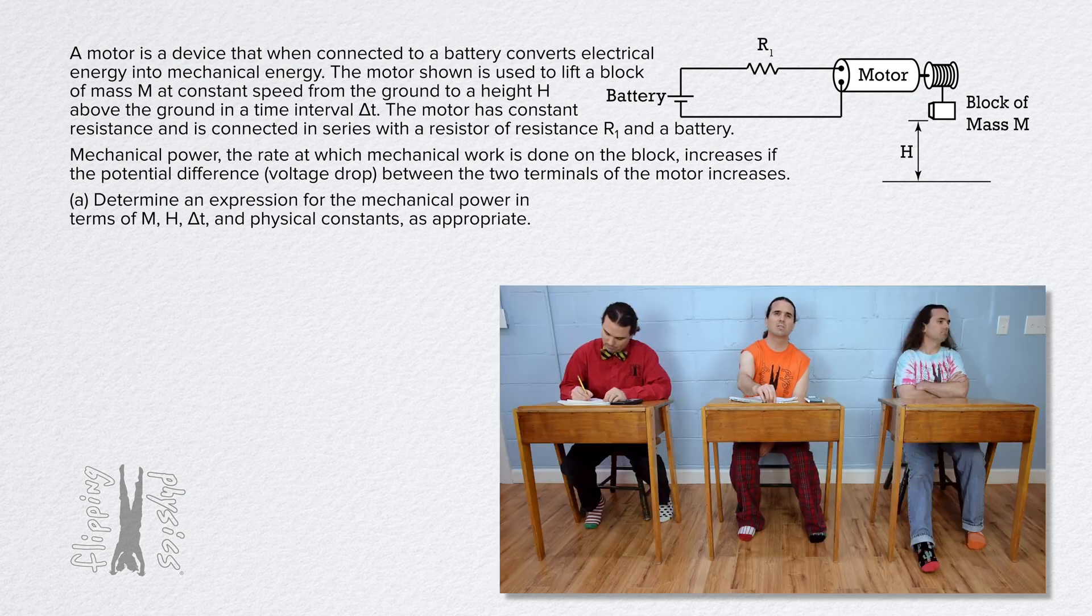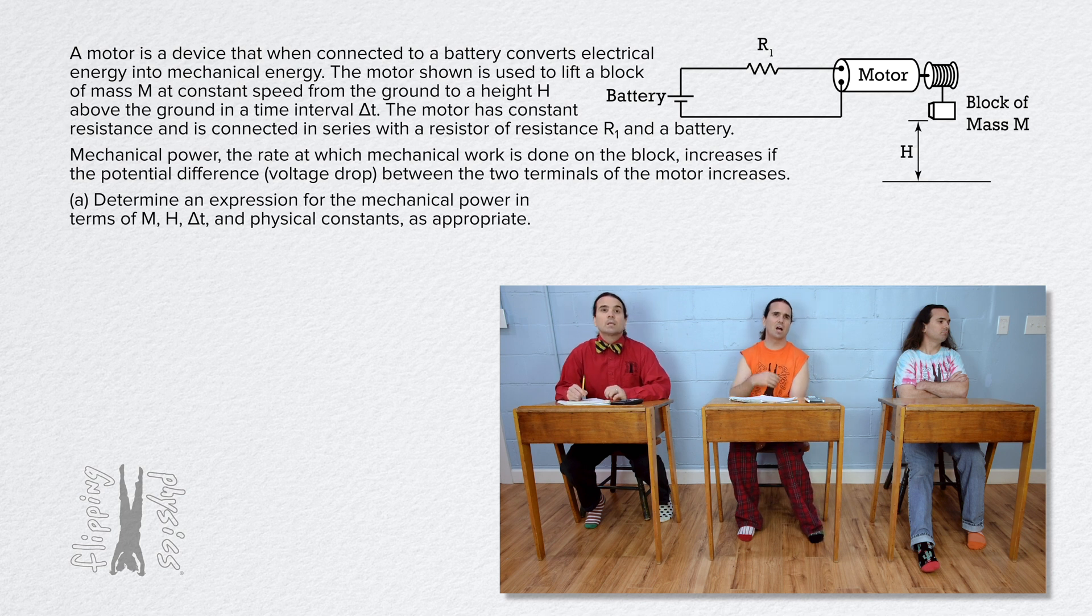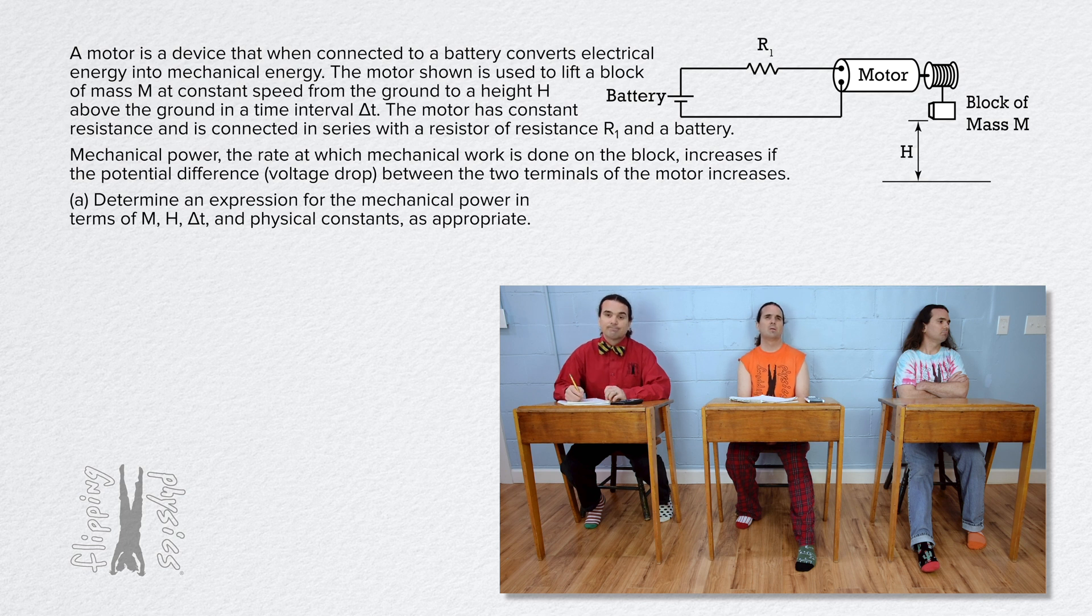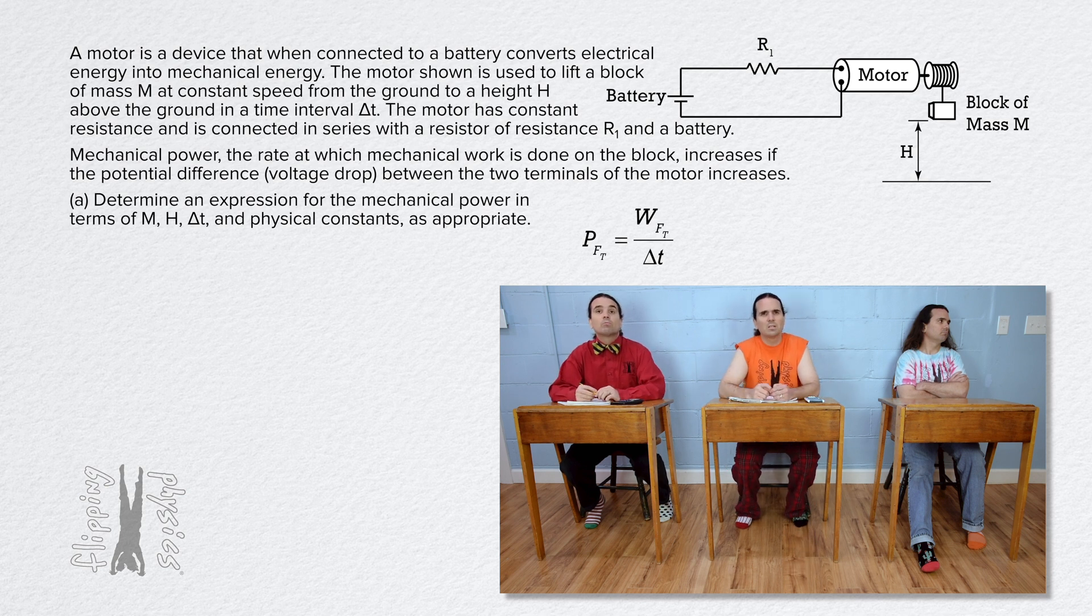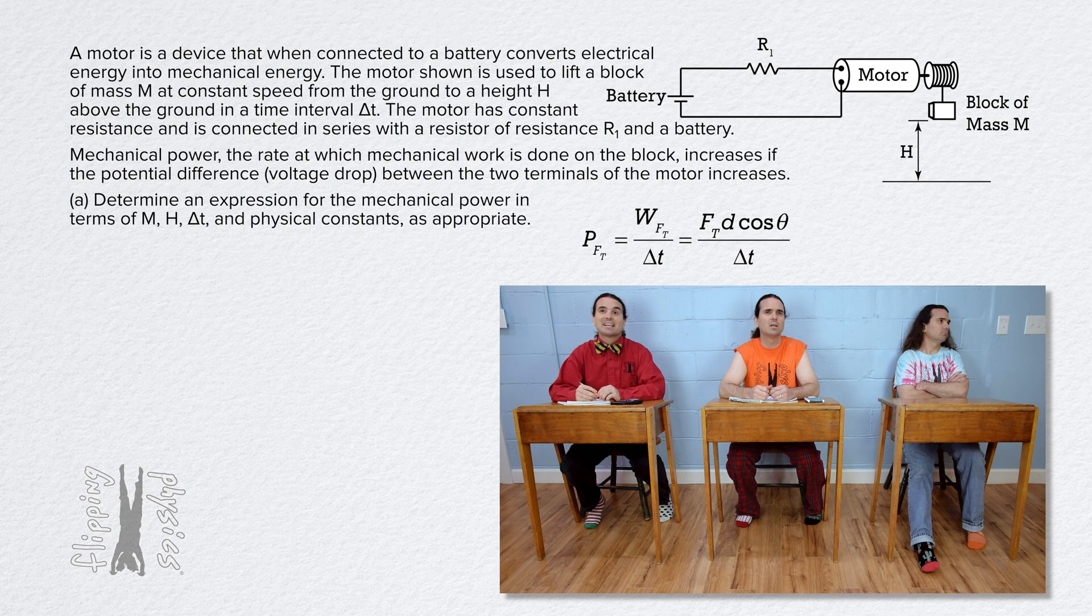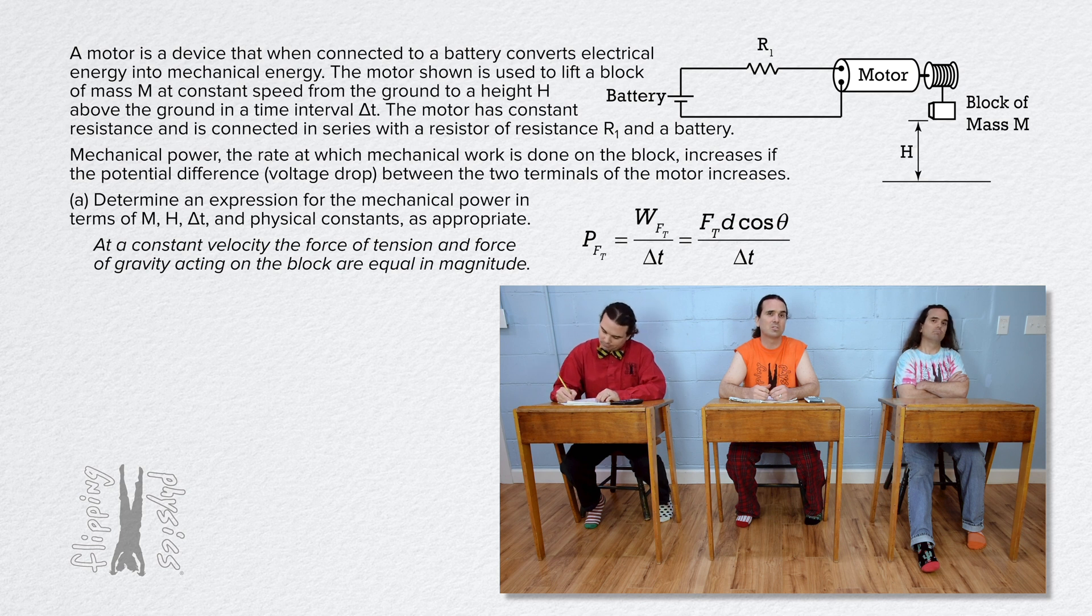Well, from the picture there is a string attached to the block. So the mechanical work done on the block by the motor is done using a force of tension on the block. Power caused by the force of tension equals the work done by the force of tension over change in time. Substitute force of tension times displacement times cosine theta in for work done by the force of tension. Because the block is moving at a constant velocity, the force of tension and force of gravity are equal in magnitude. So substitute force of gravity in for force of tension.